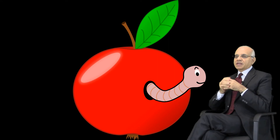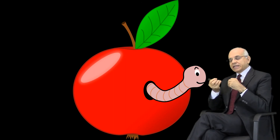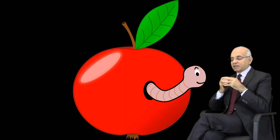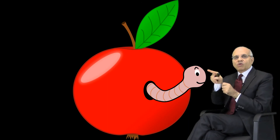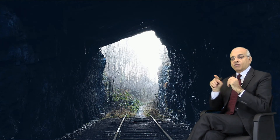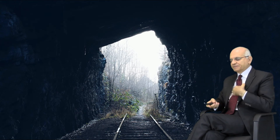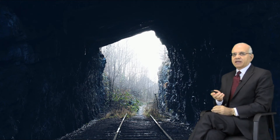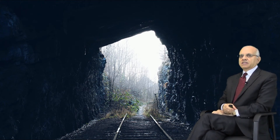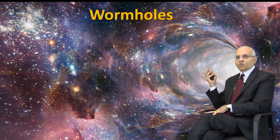Now I'm going to tell you about something that has no proof in science yet, but theoretically it's possible — and it's called wormholes. You know, worms can go through a fruit and dig a hole through it, or go through the bark of a tree. You hear of wormholes in astronomy a lot, and especially in science fiction. What are wormholes?